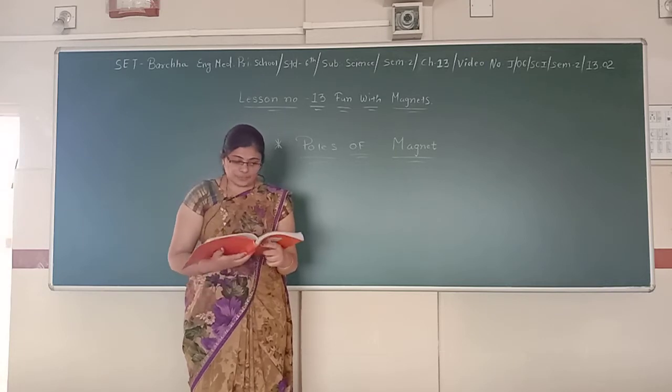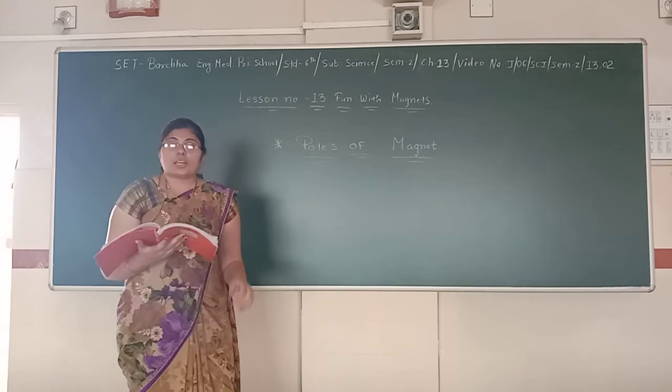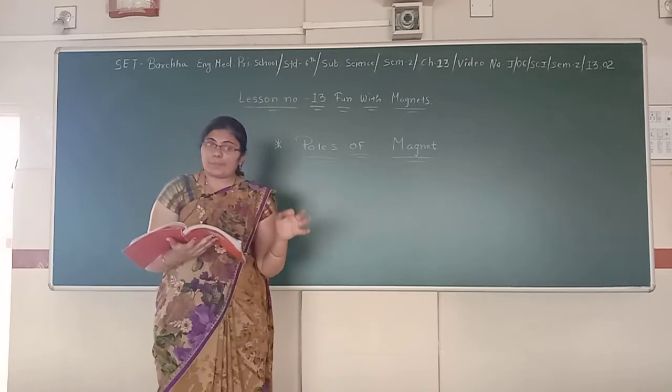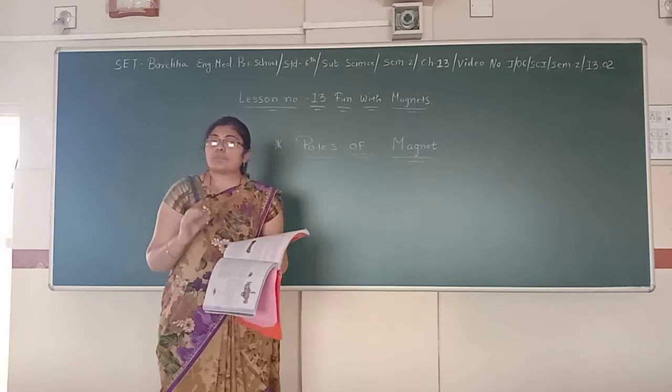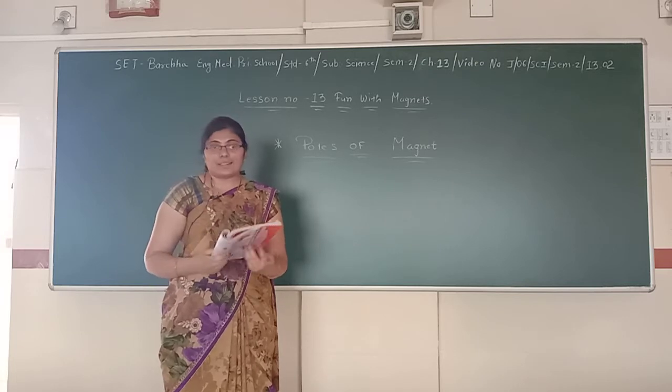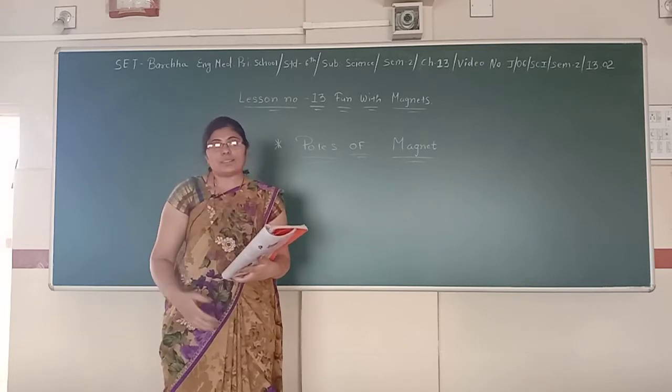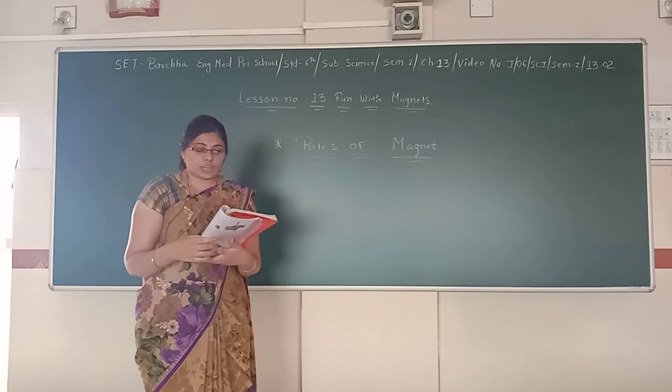Remove the iron filings sticking to the bar magnet and repeat this activity. It may happen by mistake once, but never repeatedly. So you practice this repeatedly two to three times, then you get the idea that the iron filings always get stuck to the poles of a magnet.